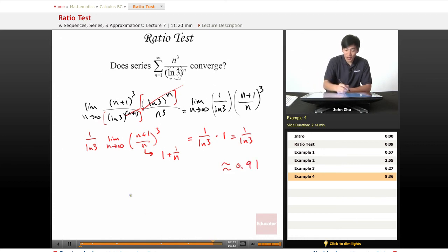So 0.91 here is less than 1, which is the value of our l. Therefore, our series converges.